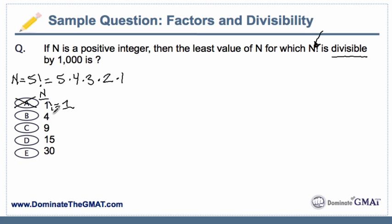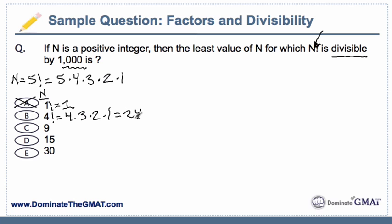Same thing with 4 factorial. If we do 4 factorial, it's 4 times 3, which is 12, times 2, which is 24, times 1, which is still 24. It's still smaller than 1,000, so there's no way 1,000 can divide into 24 — it's also going to be too small.